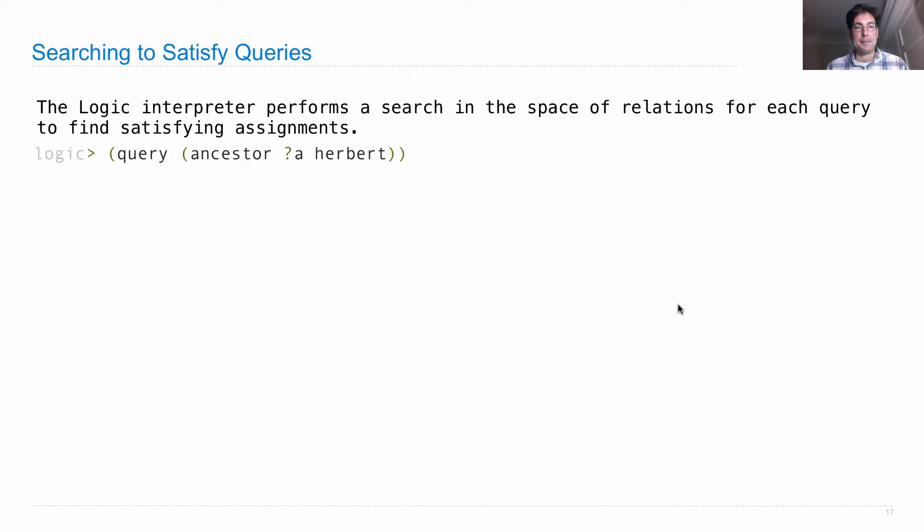So we say things like query ancestor A Herbert. And what happens when it says Delano, Fillmore, Eisenhower is that it's running a search over all of the different ancestor relations that it can derive by starting with hypotheses and leading to conclusions. So let's follow exactly what happens in the case that it found Fillmore. It's a satisfying assignment for this query.